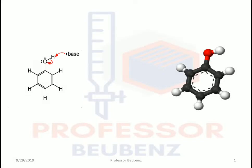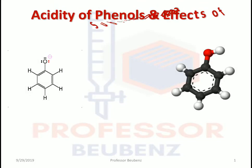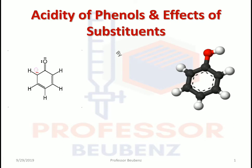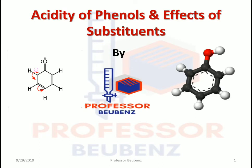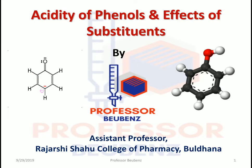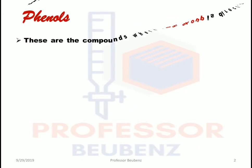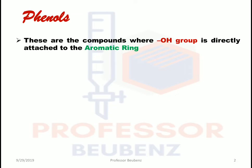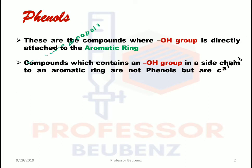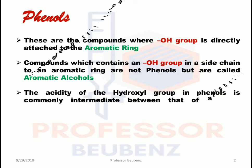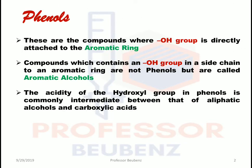Hello friends, welcome back to the channel Professor Bubenz. Today we'll see the acidity of phenols and the effect of substituents on acidity of phenols. Phenols are compounds where an OH group is directly attached to the aromatic ring, whereas compounds containing an OH group in a side chain to an aromatic ring are not phenols but are called aromatic alcohols.